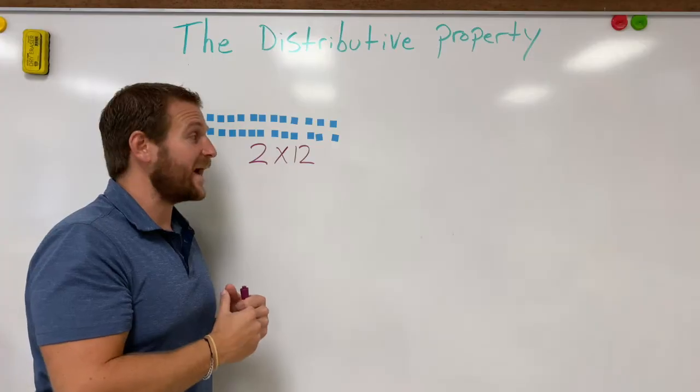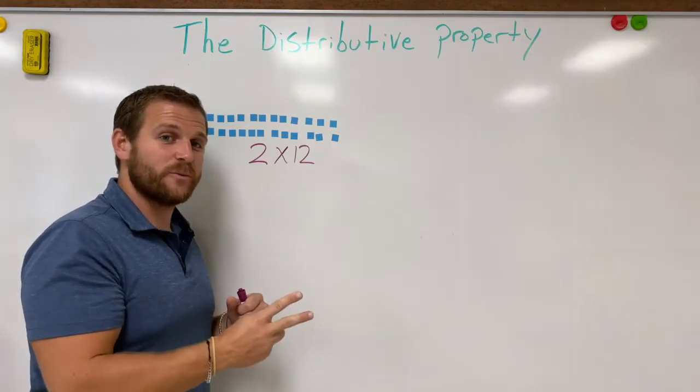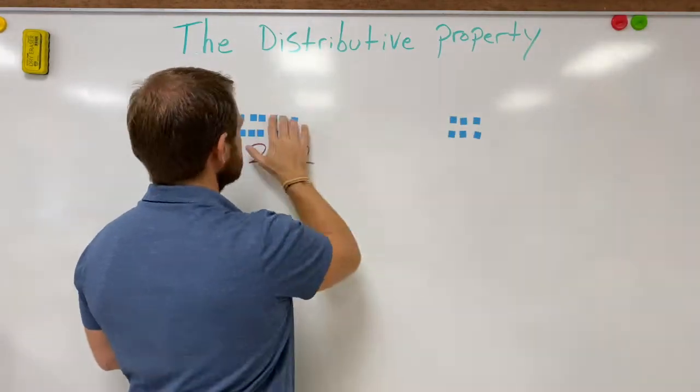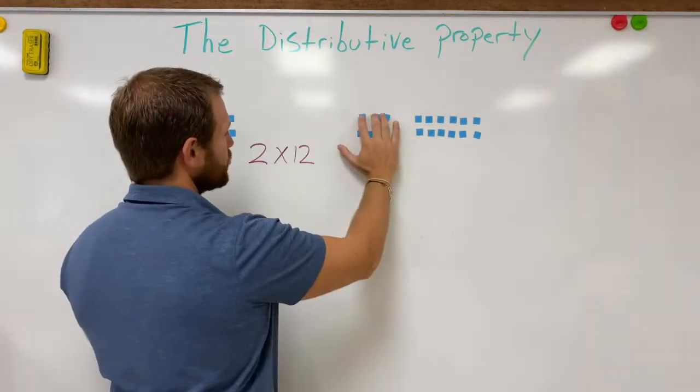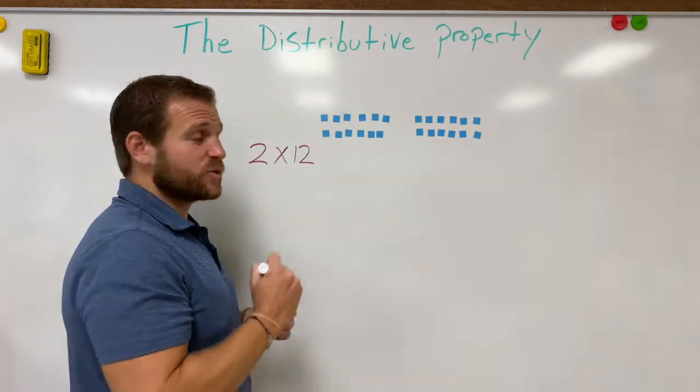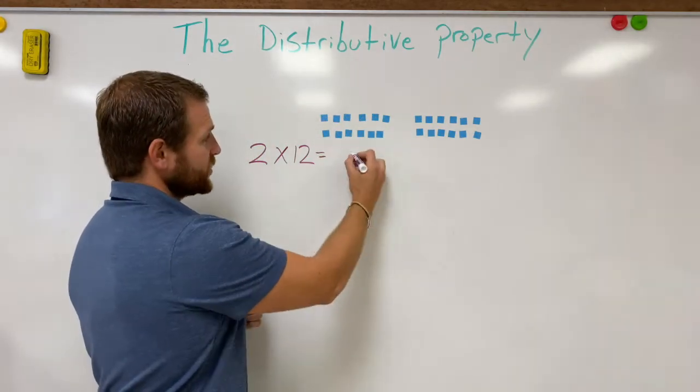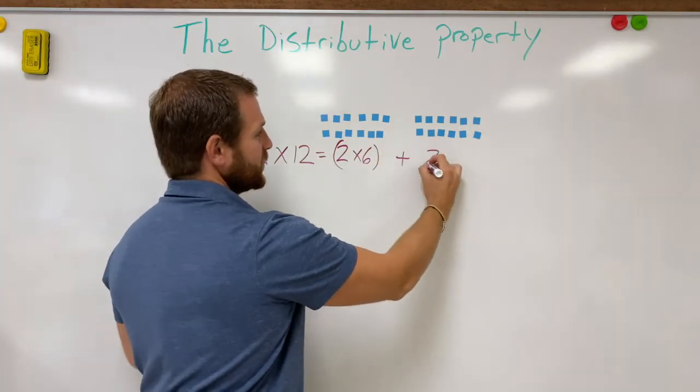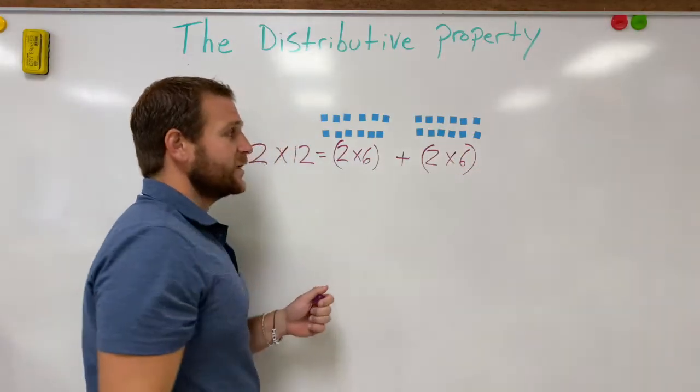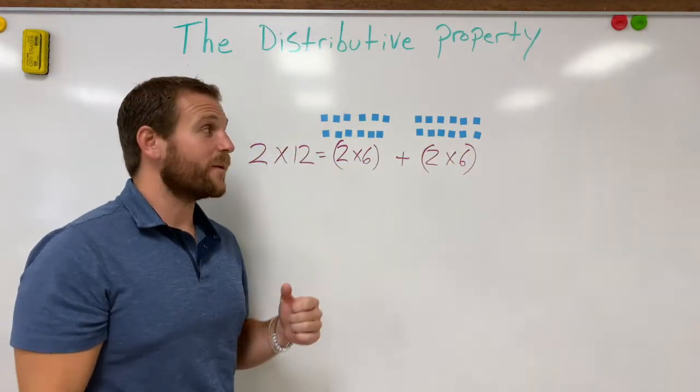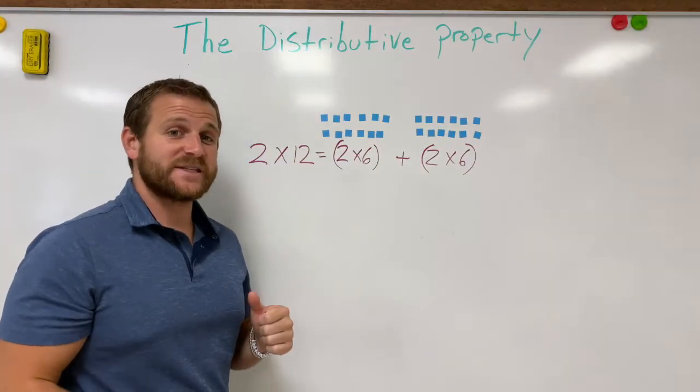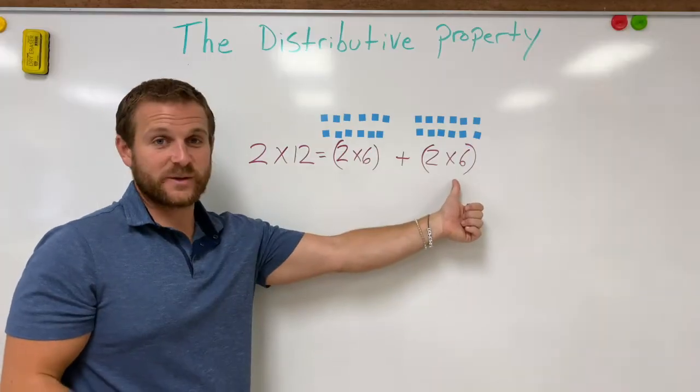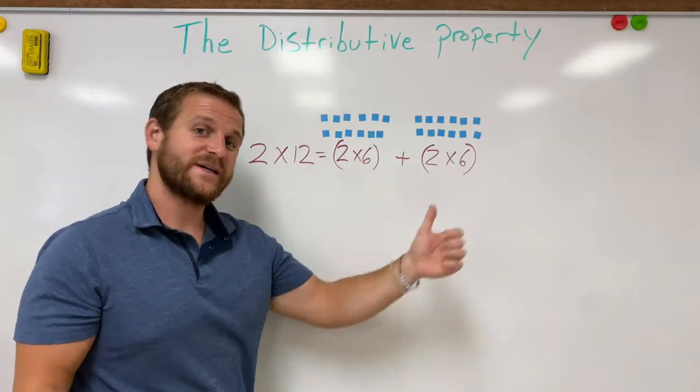So I'm going to go ahead and split it in half. What that's going to do is give me two separate groups of two times six. So let's do that now. So my two times 12 equals two times six plus two times six. Notice how I never changed the total number of unit cubes. So I'm going to end up with the same answer no matter what. Two times 12 is 24. Two times six is 12 plus two times six is 12. 12 plus 12 is going to be 24 as well.